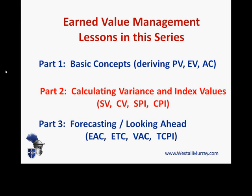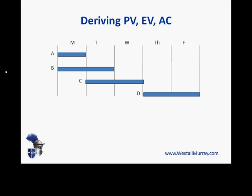Back to this Part 2 video and a quick refresher of what we've already done. We looked at a situation where we had four tasks over the course of a week — A, B, C, and D — and we identified that each of those tasks cost $50, $100, $200, and $100 in terms of our plan. Using that information, we were able to look at the end of day Tuesday and say that the planned value at that point, the budgeted cost of the work scheduled, was $250.